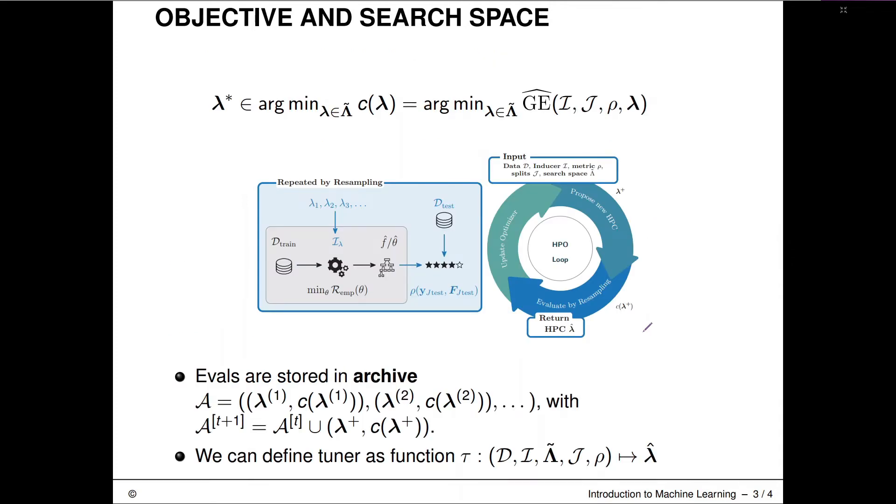So here we have the objective function again. And here's, I hope, a nice visualization of how this is operationalized and computed. So during optimization, what happens is that our optimizer—let's talk about the input first. So data set goes in and then all of that other stuff goes in here that we need to define our objective function. So the training algorithm goes in, the performance metric rho goes in, the splitting of the data set J goes in, and the search space Lambda tilde goes in, and then we propose a new configuration.